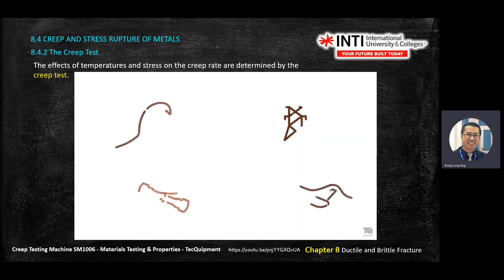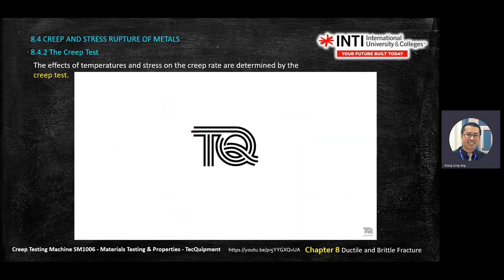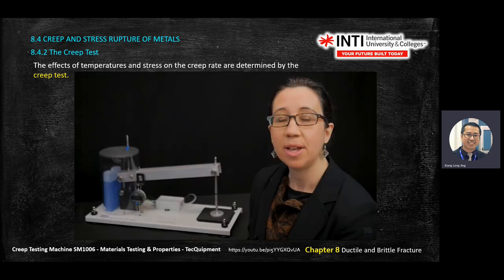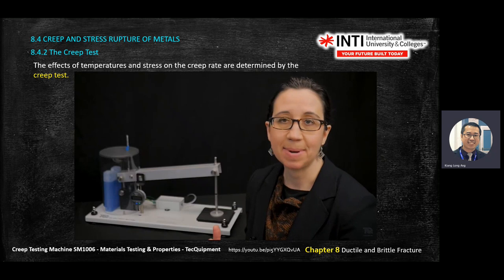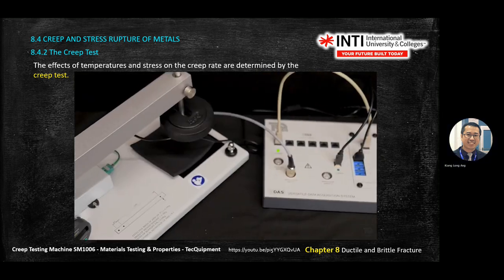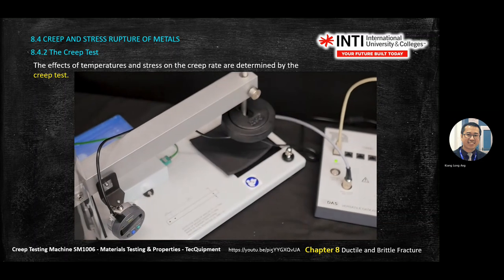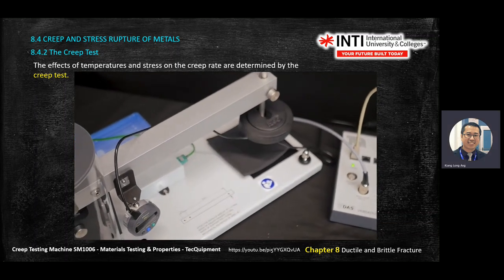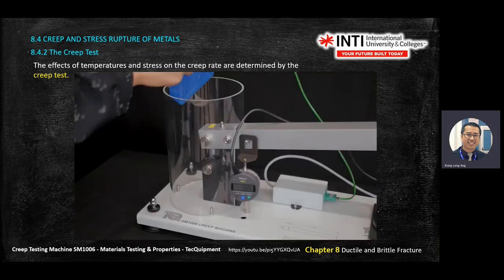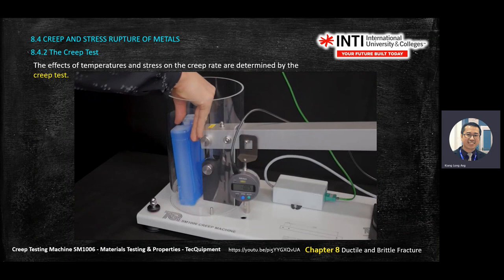This is a very small, simplified creep machine — it can be more complex but this is a simplified version. There is a weight that will pull the sample.